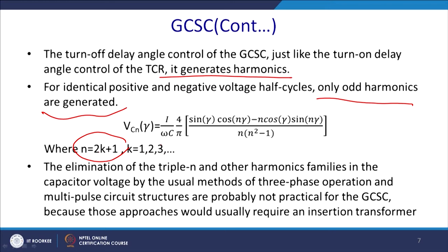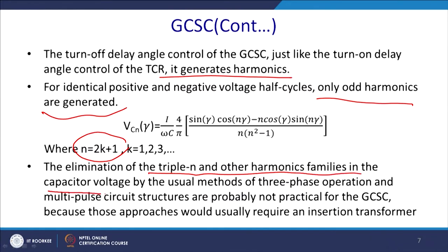We require to eliminate those harmonics. We had eliminated harmonics by different delta connections in the case of TCR, and the same principle can be applied here. However, elimination of triplet and other harmonic families in the capacitor voltage by three-phase operation and multiple circuit structures is probably not practical in the case of GCSC, because those approaches would usually require insertion of a transformer.